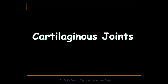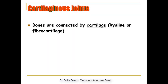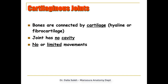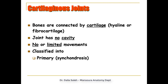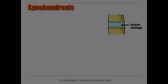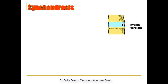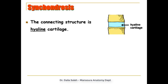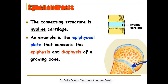In cartilaginous joints, the bones are connected by cartilage, either hyaline or fibrocartilage. The joint has no cavity because the space is filled with cartilage, so no or limited movements take place. Cartilaginous joints are classified into primary cartilaginous joints, also known as synchondrosis, or secondary cartilaginous joints, also known as symphysis. In synchondrosis, the connecting structure is hyaline cartilage. An example is the epiphyseal growth plate that connects the epiphysis with the diaphysis of the growing bone. It eventually ossifies, making it a temporary joint.